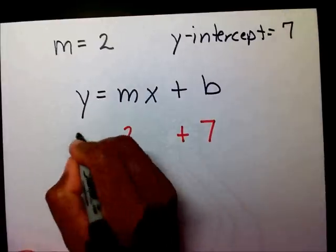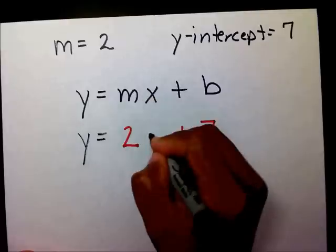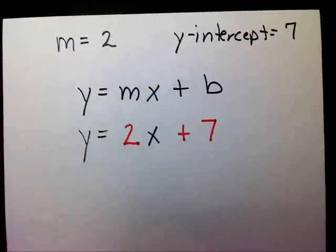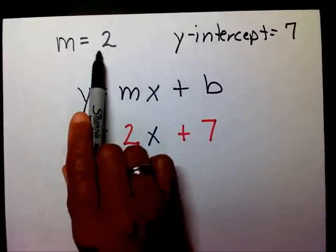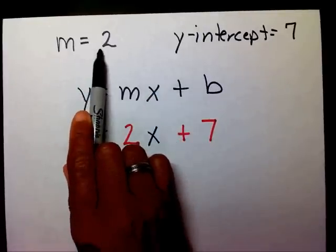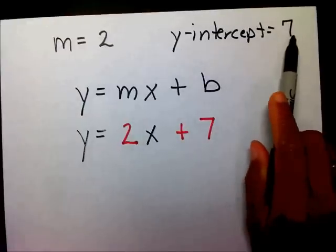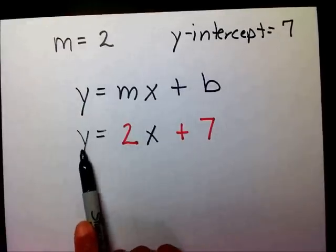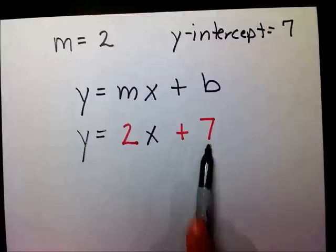I'm going to bring down my y equals and my x. So, given a slope of 2 and a y-intercept of 7, I can now write y equals 2x plus 7.